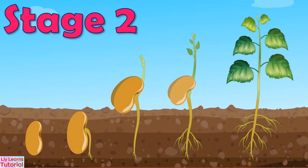Stage 2: When the seed gets moisture from the soil, the roots start to grow.